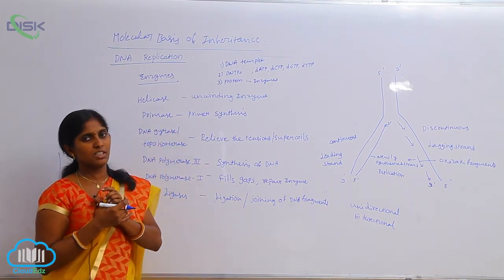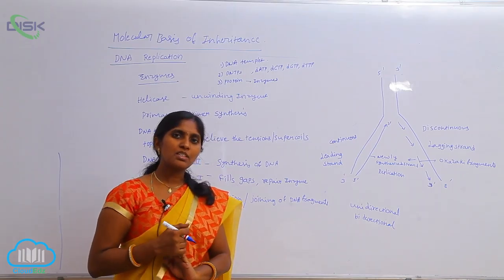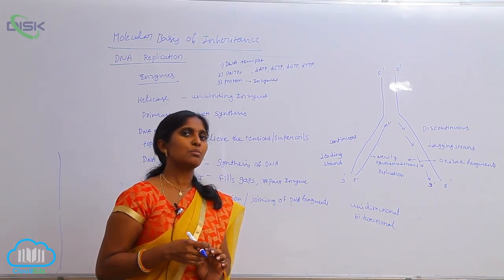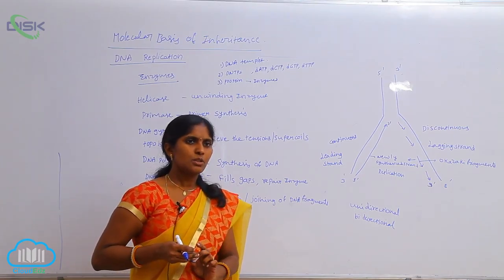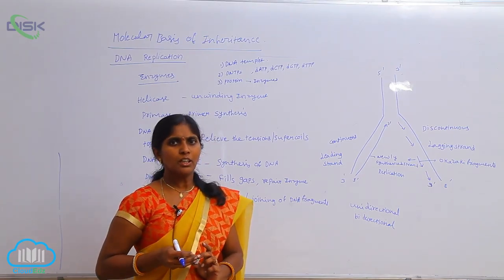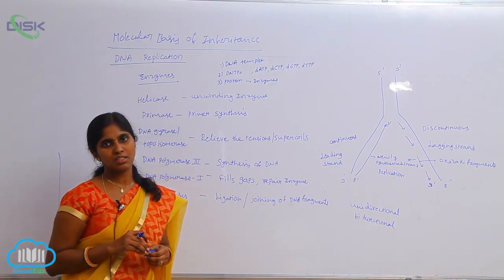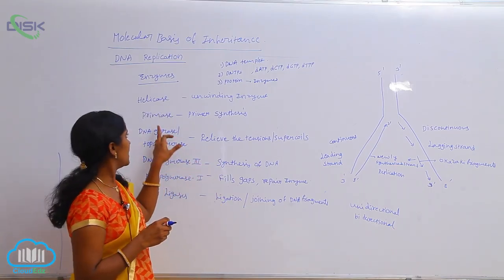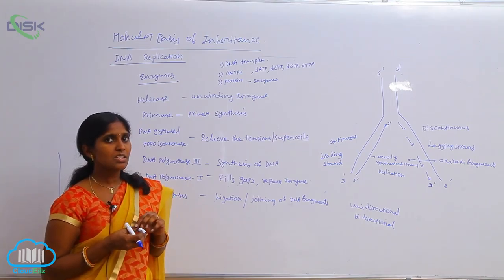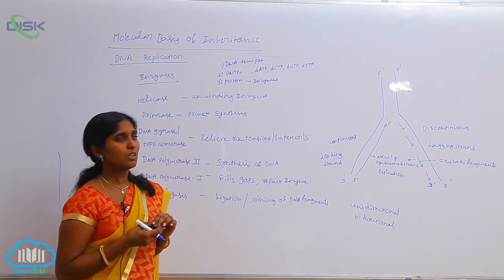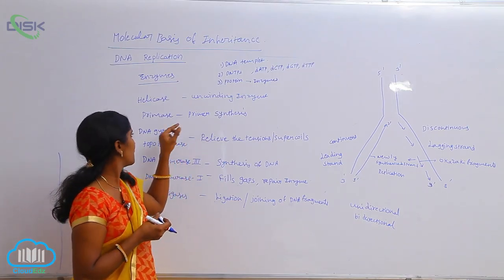Next is the primase enzyme. During DNA replication, primer synthesis is most important. Approximately 10 to 60 base pairs in length of the primer is synthesized in the presence of the primase enzyme. The primase enzyme is responsible for the synthesis of the primer, which is a short segment of RNA.